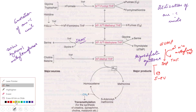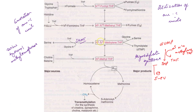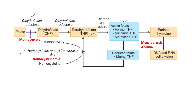Thymidylate synthase is inhibited by the drug 5-fluorouracil — that is the clinical implication here. Finally, there is formation of N5-methyl-THF, which helps in regeneration of tetrahydrofolate. It also helps in the regeneration of the principal methyl donor, i.e. SAM. This reaction is done with the help of the enzyme homocysteine methyltransferase, where methyl-THF forms THF and there is conversion of homocysteine to methionine. This methionine then again forms homocysteine along with synthesis of S-adenosylmethionine.